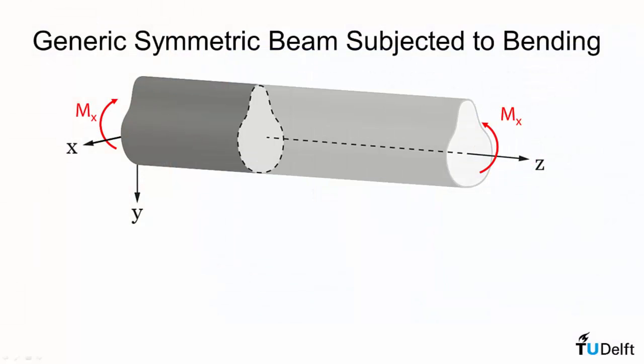So we will take a section and look at that cross-section and observe that the internal forces acting on that cross-section will result in only an internal moment, mx.